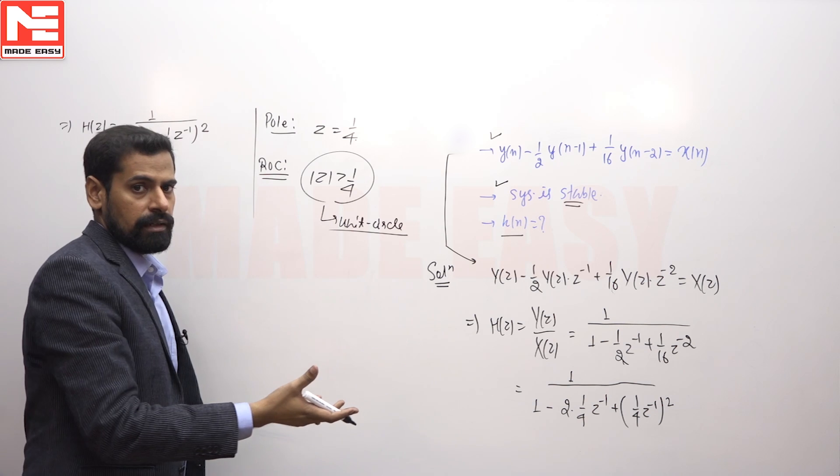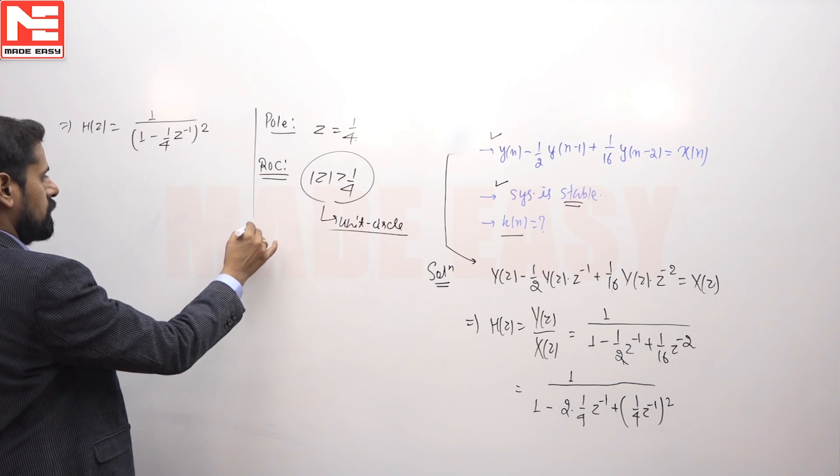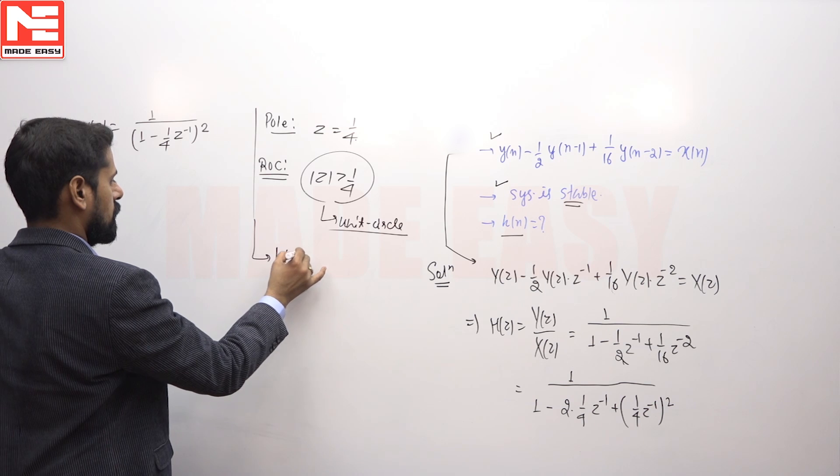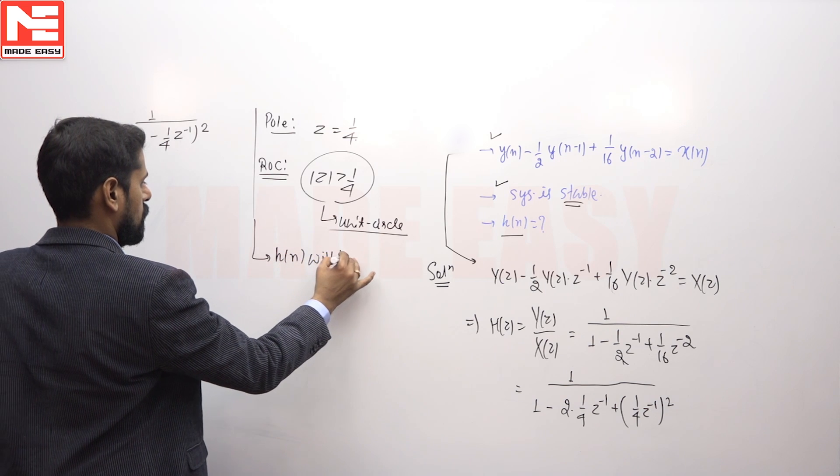The nature of the ROC is outside the circle. If ROC is outside the circle, then the nature of h(n) will be right-sided.